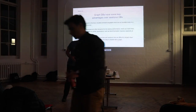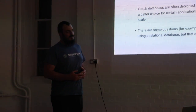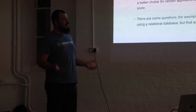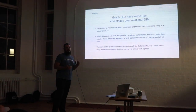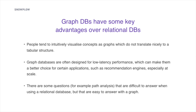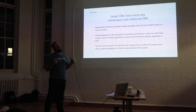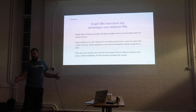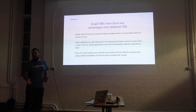This talk is about how to model events as a graph. The main reason we want to do this is that we have a mission to help people make better decisions. When people think about complicated subjects and try to visualize their thoughts, they do a graph. If we can reduce the distance between that initial idea and the technical implementation, we believe this will help people make better decisions more easily.